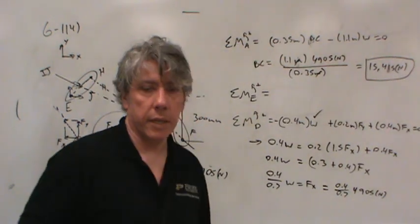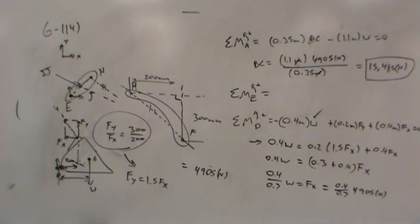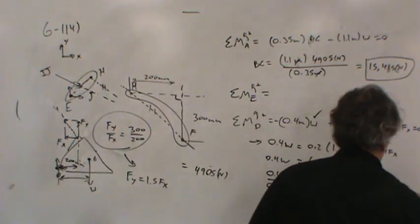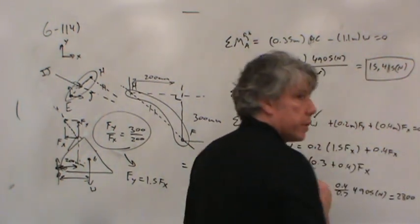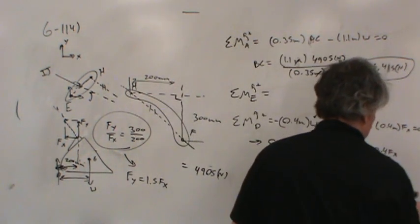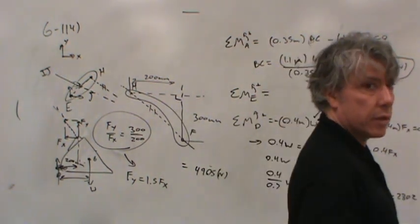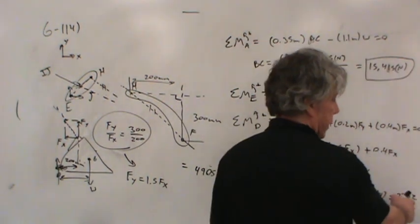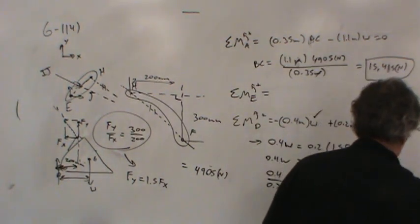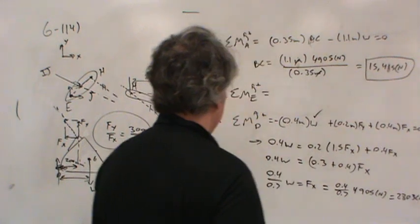So what I'll do is make the substitution. 0.4 times W equals 0.2 times FY, but instead of FY I will use 1.5 FX plus 0.4 FX. Then all I've got to do is put the FXs together. So 20% of 1.5 would be 0.3, plus 0.4 FX. 10% of 1.5 is 0.15, so 20% is 0.3. Pull out the other multiplier, that's 0.4 W, and so 0.4 over 0.7 is FX. Now all we have to do is take 0.4 over 0.7 times 4,905 newtons. 2,803 newtons. Now that's not all that I care about, I also care about FY.